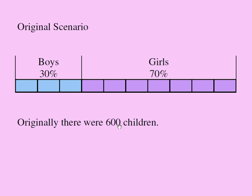Originally we had 600 children — 30% of them were boys and 70% of them were girls. I used a strip that contains 10 chunks. Each represents 10% of the kids. I have three chunks, or 30%, representing the boys, and seven chunks, or 70%, representing the girls.